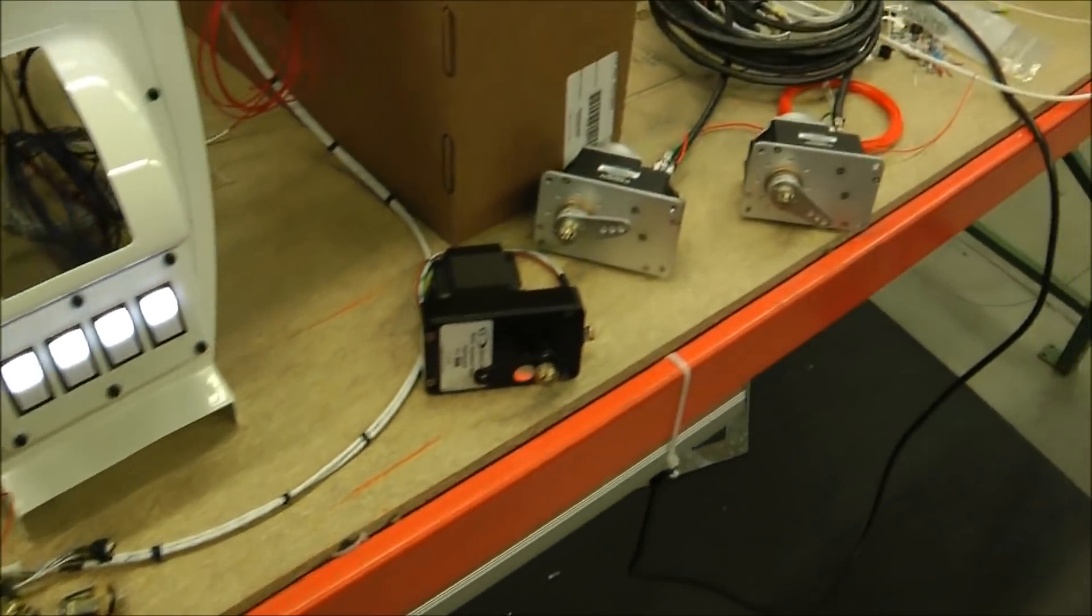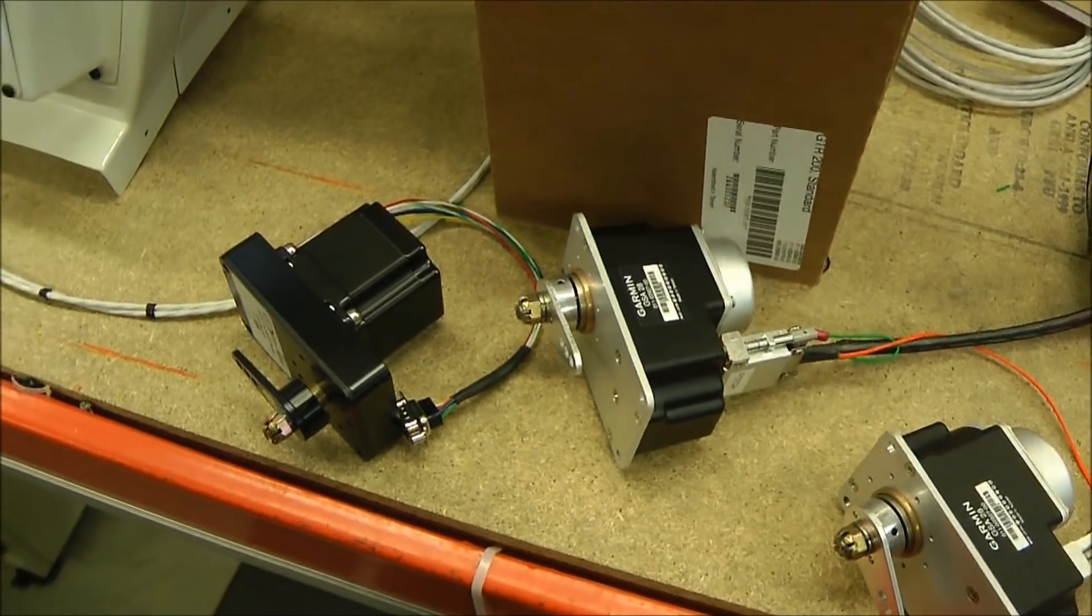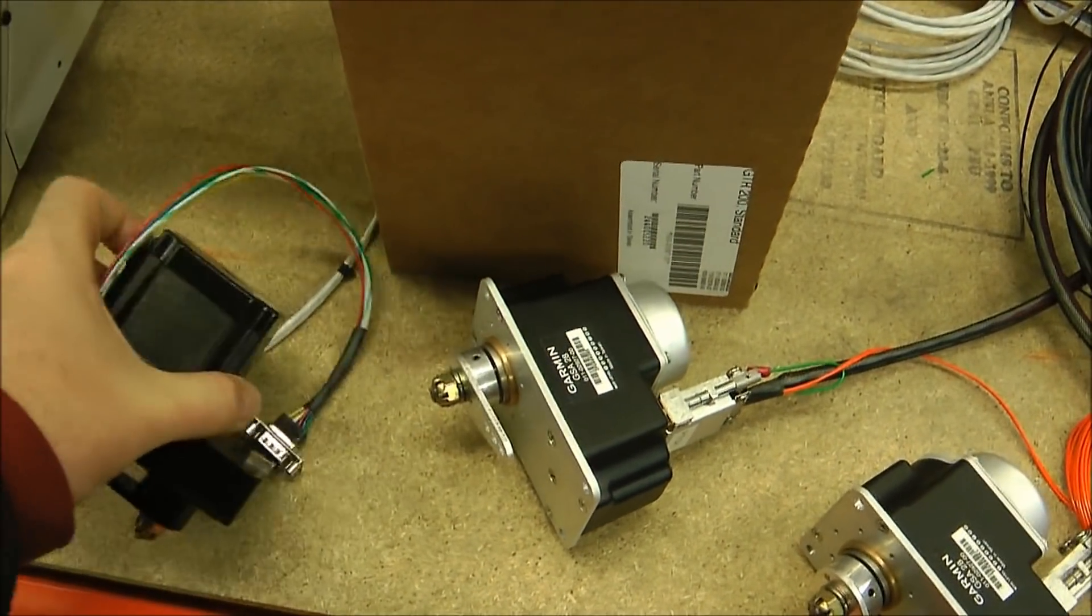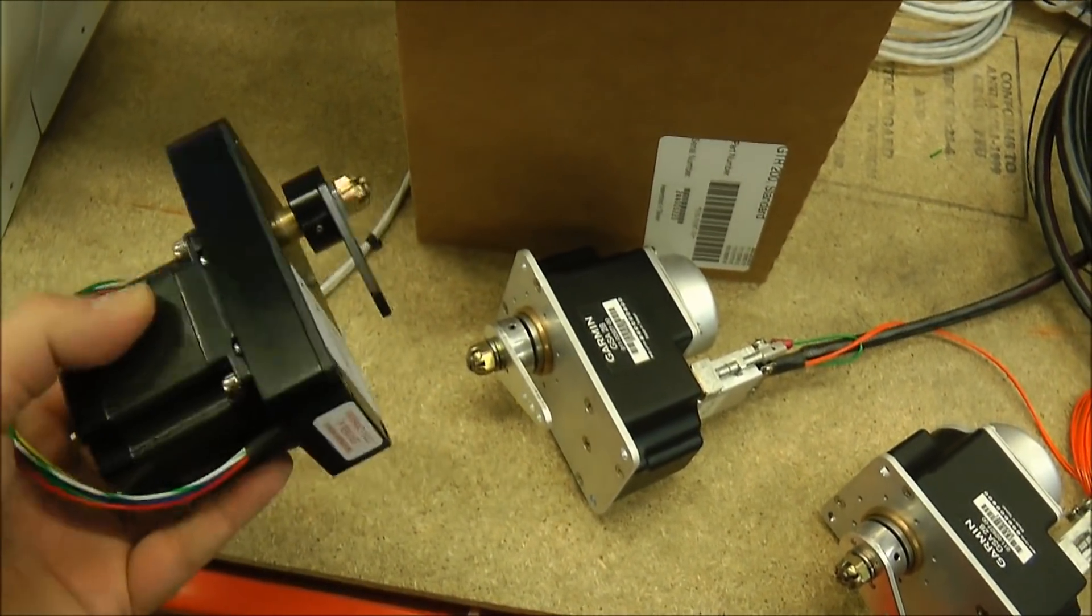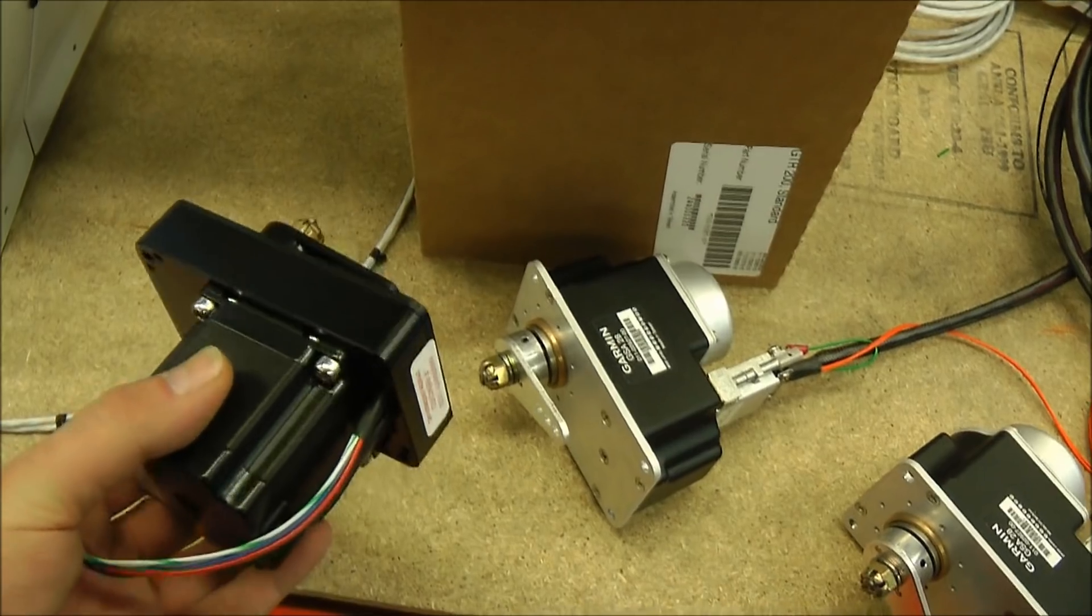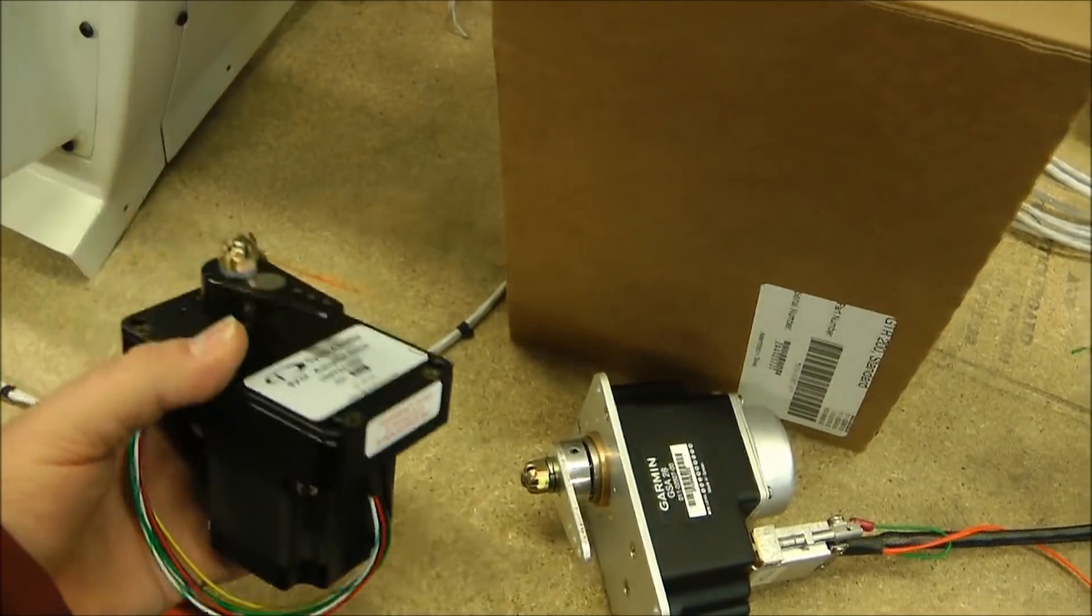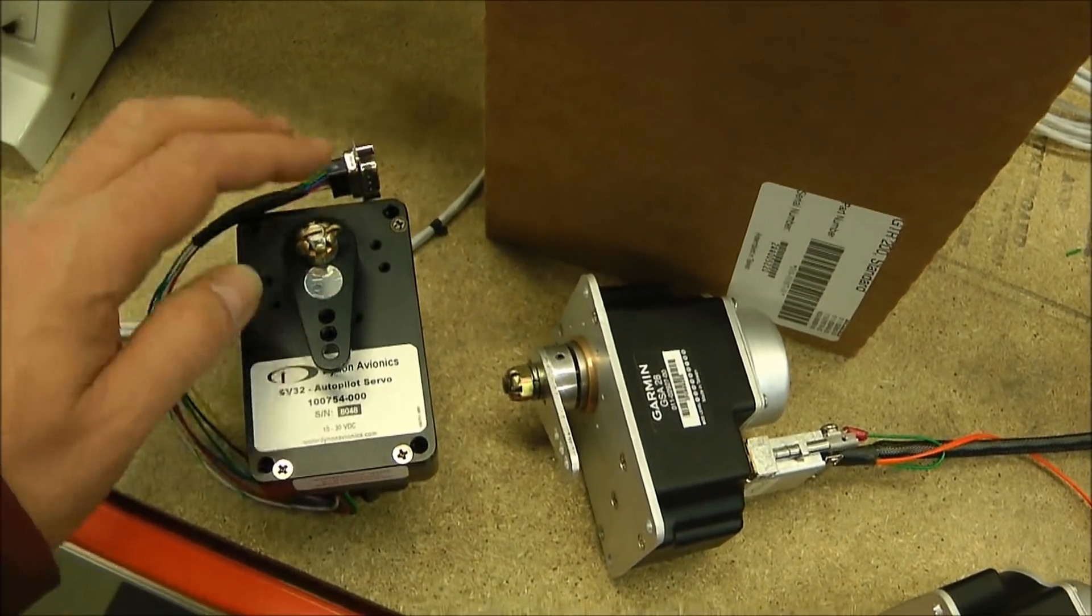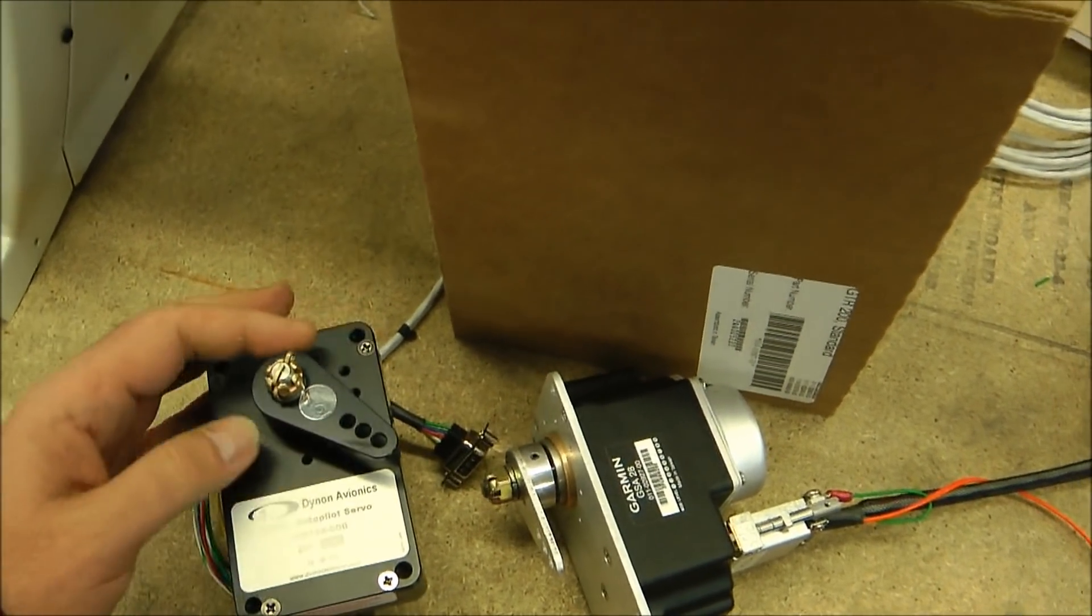If we look over here, I have a few servos laying here. These are just autopilot servos. If you haven't seen an autopilot servo, this is what they look like. This is what the Dynon autopilot servo looks like. Very much similar in construction to the TrueTrack servos, kind of the guys that started it all. TrueTrack uses this style servo. So does Grand Rapids, MGL, Dynon, Advanced Flight.